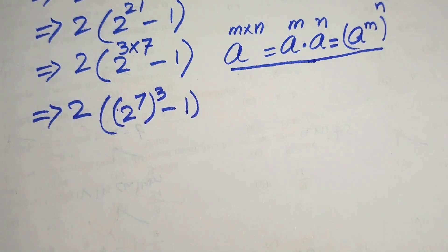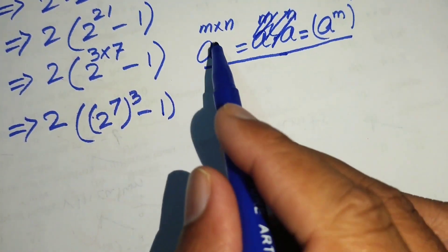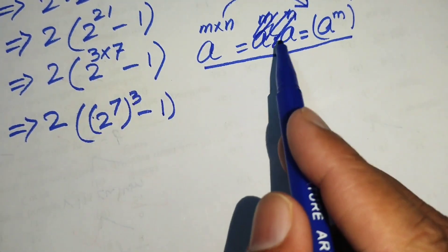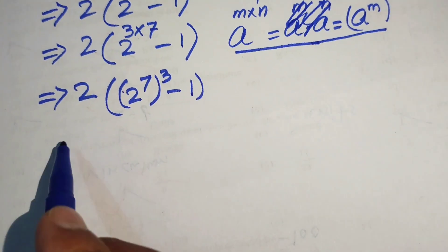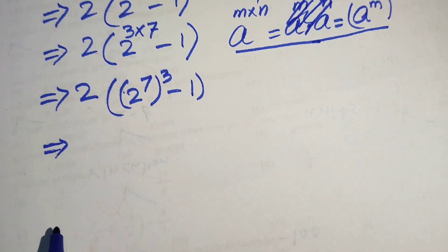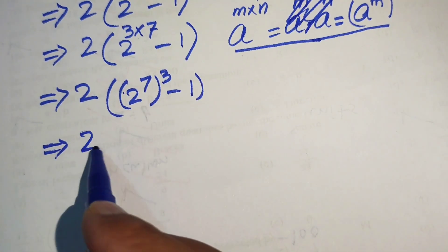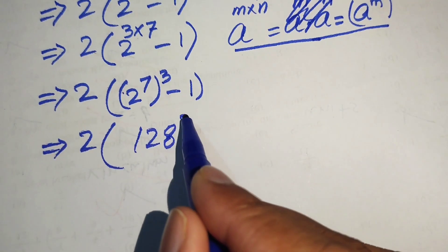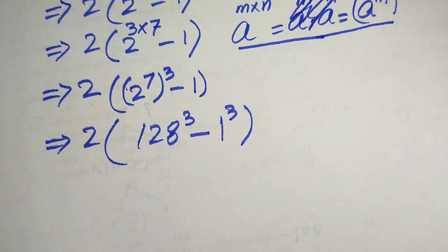We cannot directly use that intermediate step, so we move to the next step. We know that 2 to the power of 7 equals 128, so we write this as 128 cubed minus 1 cubed.